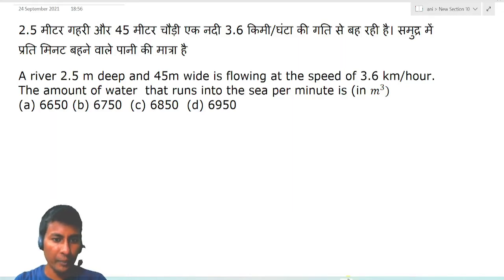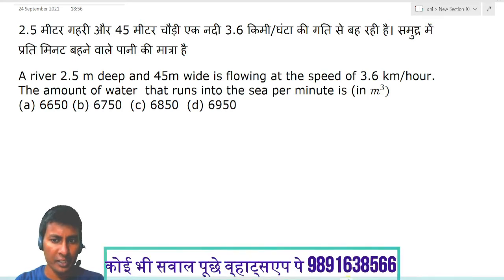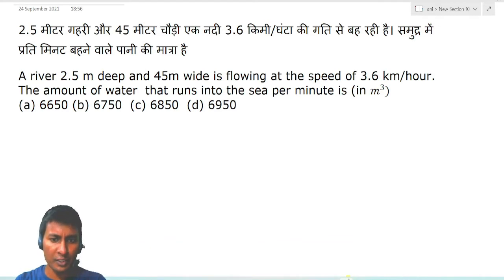A river 2.5 meters deep and 45 meters wide is flowing at the speed of 3.6 km per hour. The amount of water that runs into the sea per minute is in meter cube. This is a very easy question.